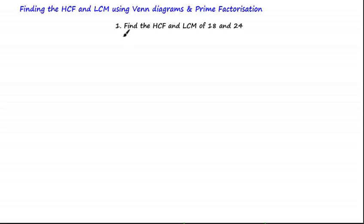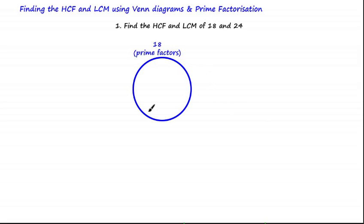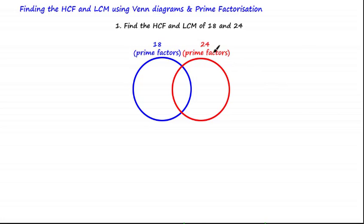Let's use this method to look at this question: find the highest common factor and the lowest common multiple of 18 and 24. Using the Venn diagram method, let's use a blue circle to represent the set of prime factors of 18, and a red circle to represent the set of prime factors of 24. We'll need to fill in this diagram using the prime factorization method for each number first.